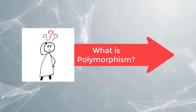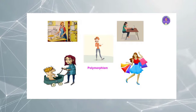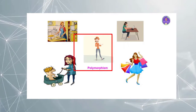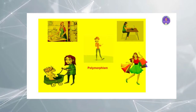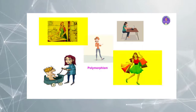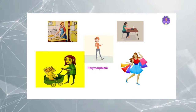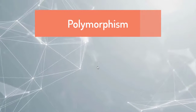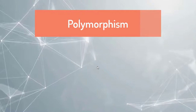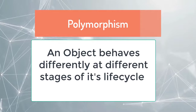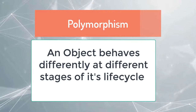Let's begin with what is polymorphism. To understand polymorphism, let's take an example of a lady. In real time, we'll consider a lady as an object. She acts differently at different stages of her life cycle — like she will do cooking, shopping, work, and take care of a baby. Similarly, in programming, poly means many, morphism means one or more forms. So in Java, the definition of polymorphism is: an object showing different behavior at different stages of its life cycle is called polymorphism.